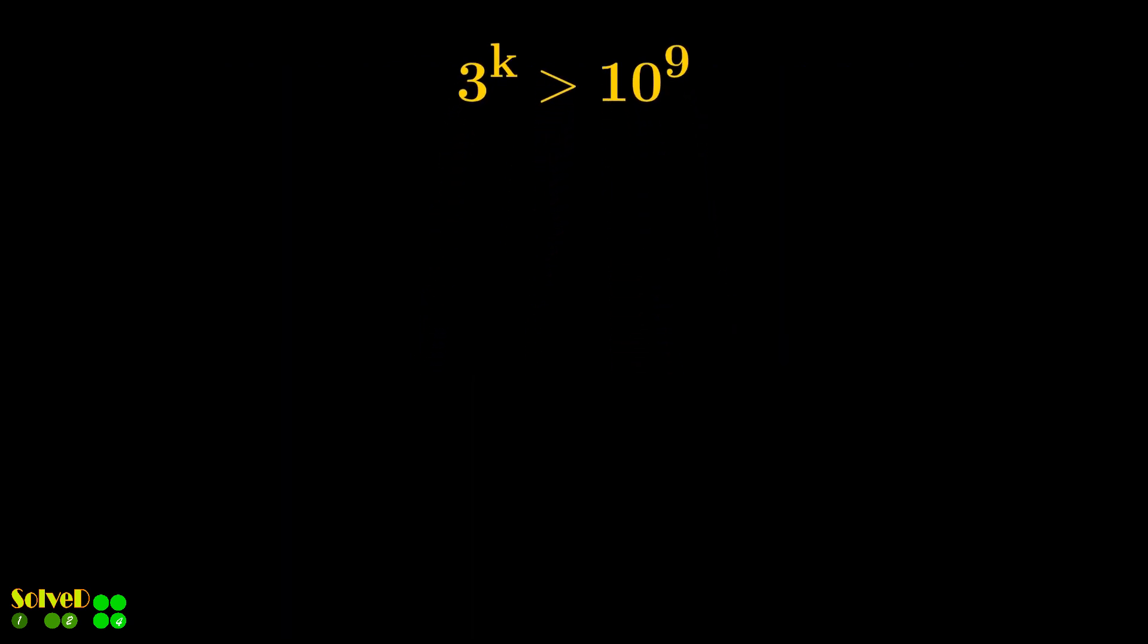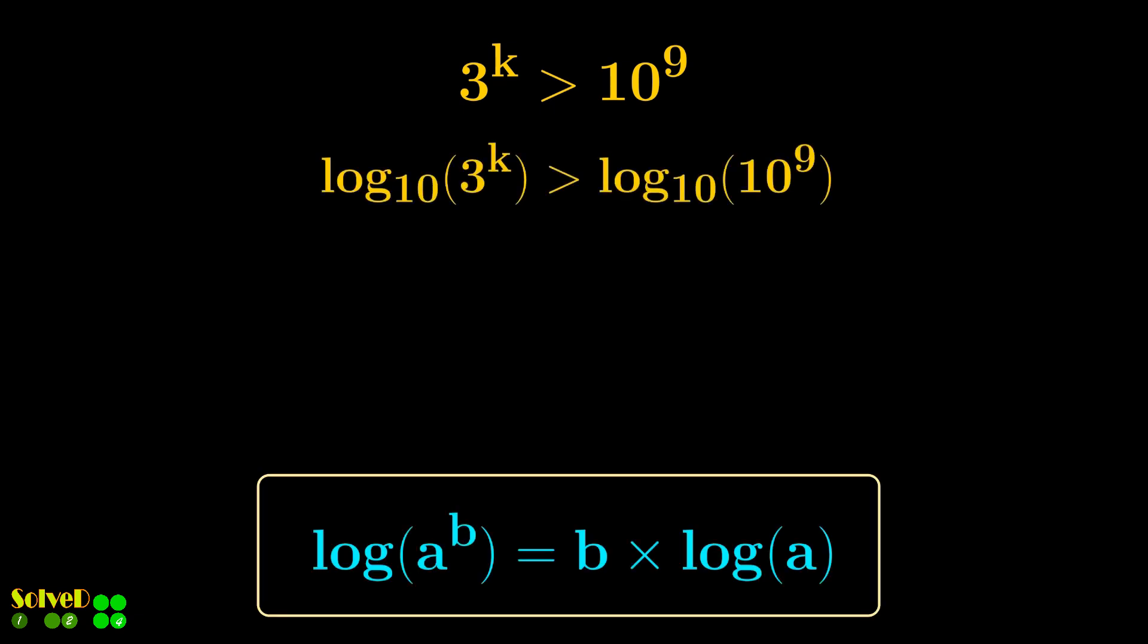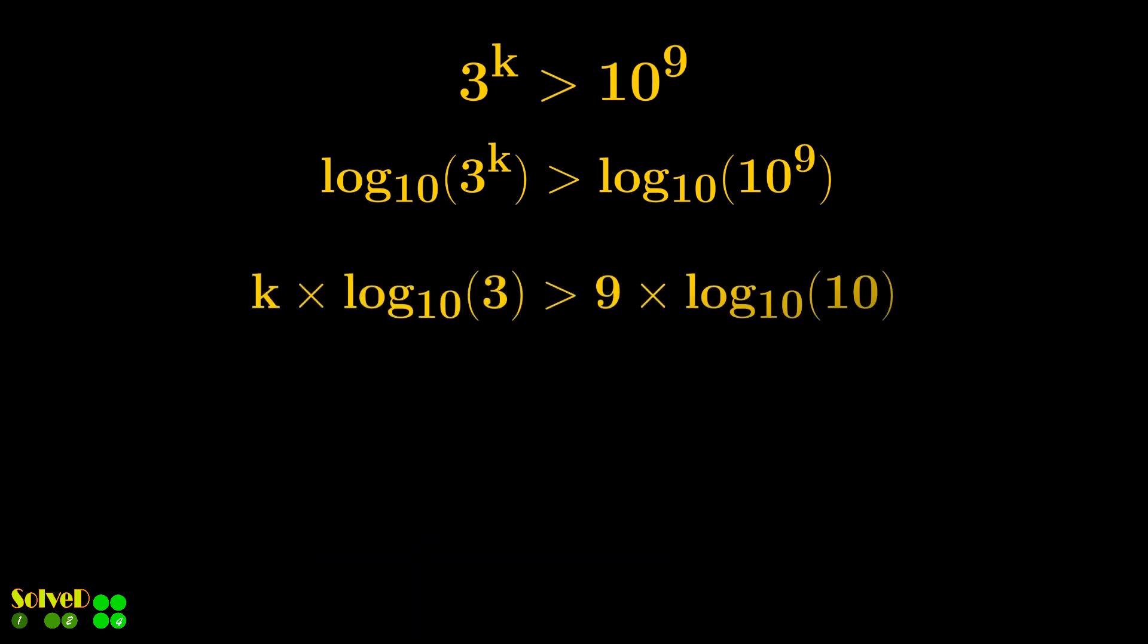Let's consider the inequality. Take logarithm of both sides, for example log base 10. Using properties of logarithms, the log of 3 with an exponent K is equal to K times the log of 3.